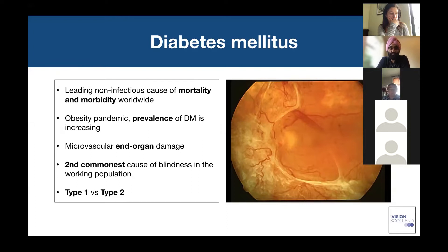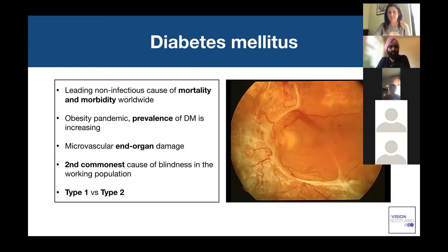It's not just the eyes — patients with diabetes commonly get renal problems too. Diabetes has a profound impact on the patient population and is regarded as the second commonest cause of blindness in the working population. There are two types of diabetes — type one and type two — and we'll discuss how they manifest in terms of their ocular presentation.